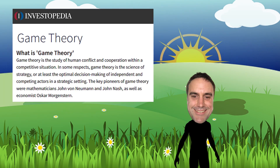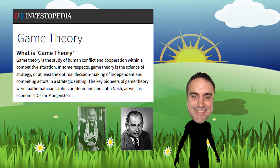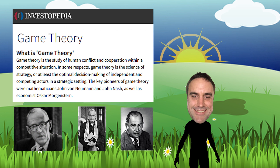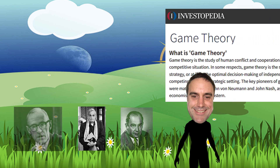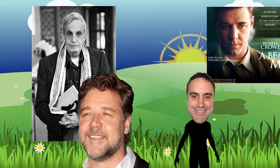The simple definition of game theory is the study of human conflict and cooperation within a competitive situation. In some respects, game theory is the science of strategy, or at least the optimal decision making of independent and competing actors in a strategic setting. The key pioneers of game theory were mathematicians John von Neumann and John Nash, as well as economist Oscar Morgenstern. I'll give special mention to John Nash because he was played by totally Aussie and totally not Kiwi Russell Crowe in the film A Beautiful Mind.